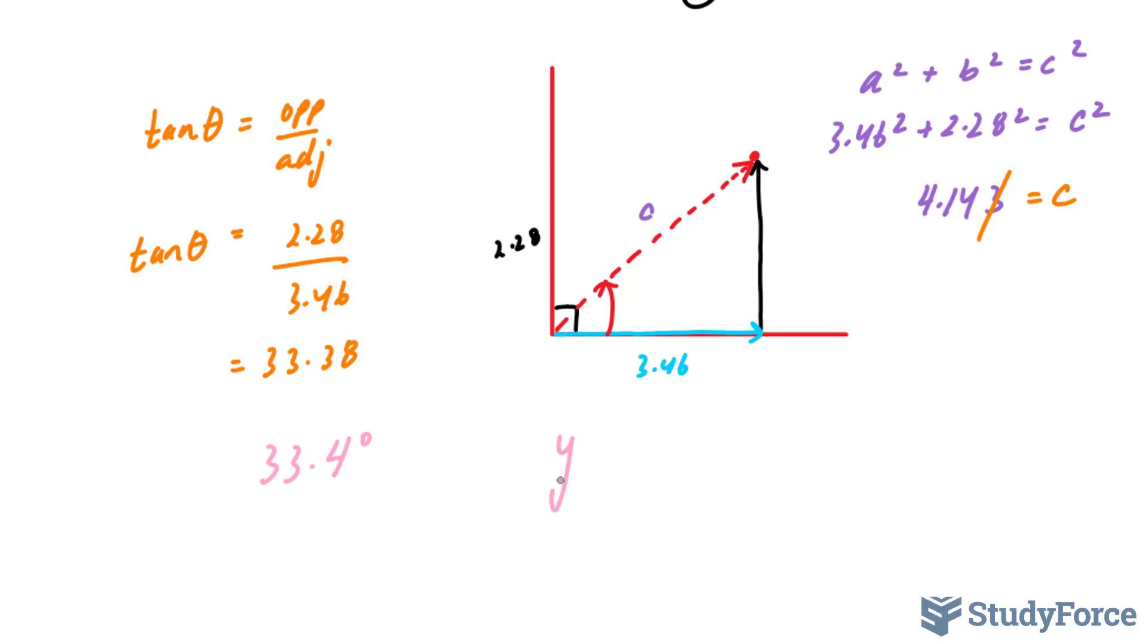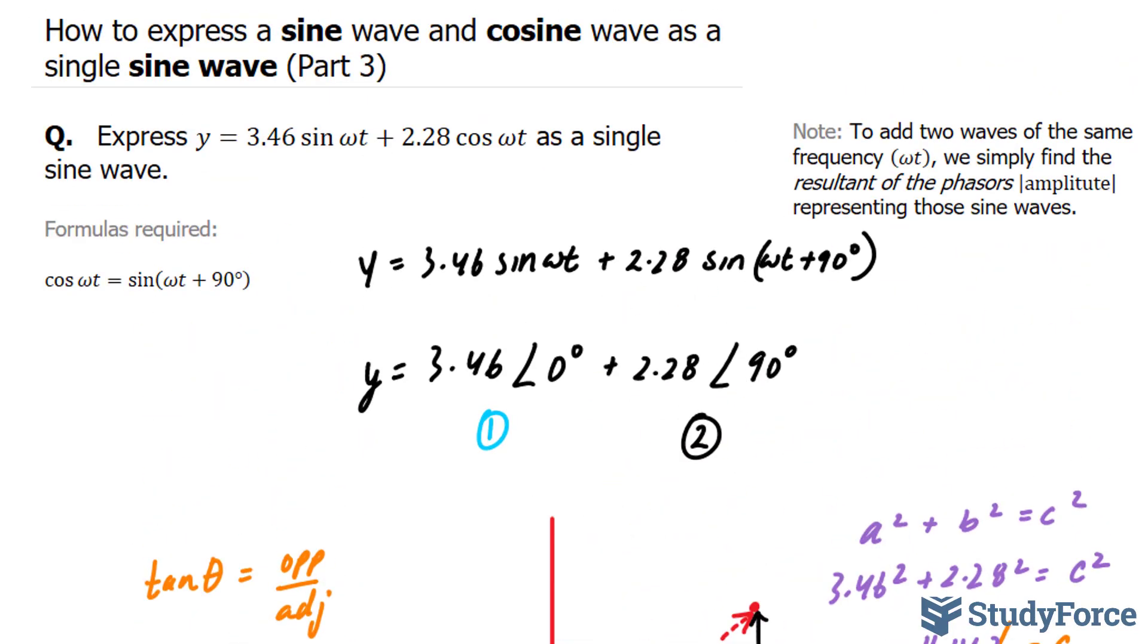Writing this as a single sine wave, we have y equals 4.14 sine omega t plus 33.4 degrees. And there you have it. That is how to combine a sine and cosine wave as a single sine wave.